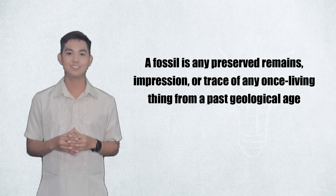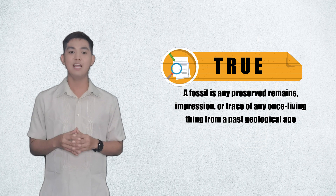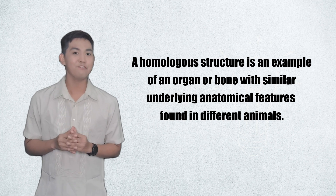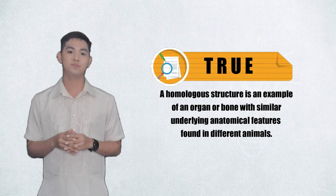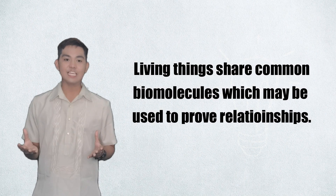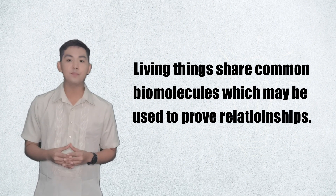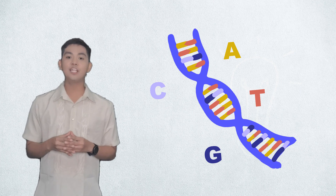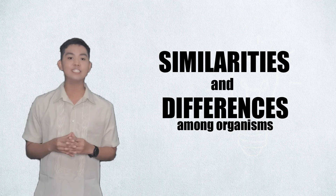Before we start, identify whether the statements are true or false. It's false! Living things share common biomolecules which may be used to prove relationship. The chemicals include DNA and proteins. The building blocks of these chemicals may be analyzed to show similarities and differences among organisms.